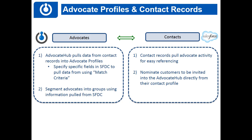Based on the information you get from Salesforce and put onto your advocate's profile, you can segment your advocates based on this information. For example, if you want to map over their NPS score, their industry, or their company size, you can make all these custom mappings occur and then segment your advocates based on that information in the Advocate Hub.